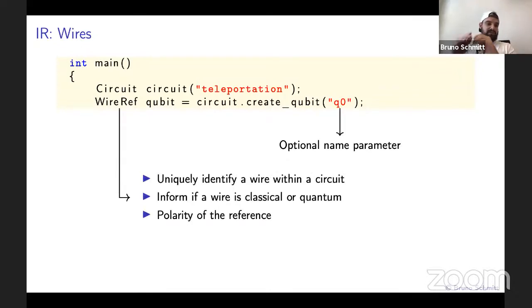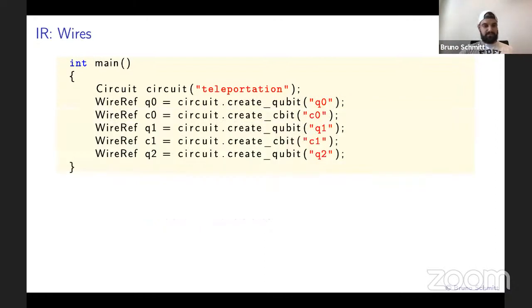The create_qubit function returns a WireRef. This is some lightweight object that serves three purposes: to uniquely identify a wire within a circuit, to indicate whether a wire is classical or quantum, and to indicate its polarity. This is quite useful when you're trying to create negatively controlled gates, also known as open control gates. Once we have created all the wires we need, we can add instructions to a circuit.